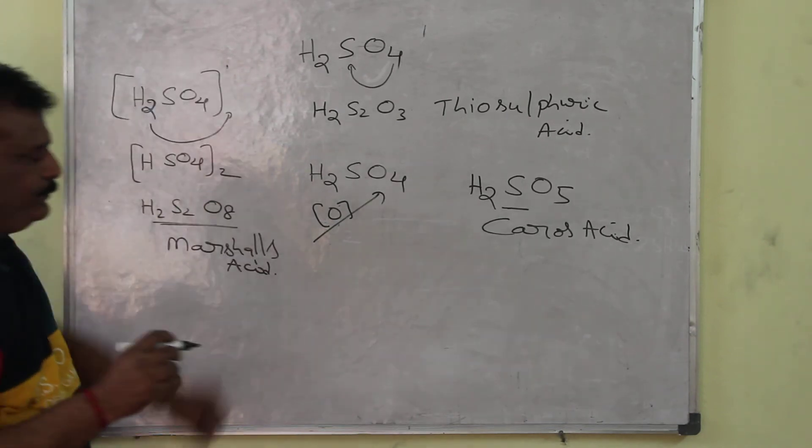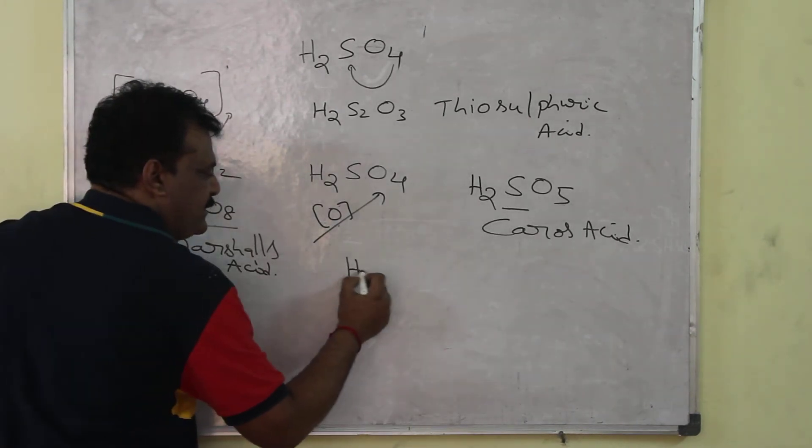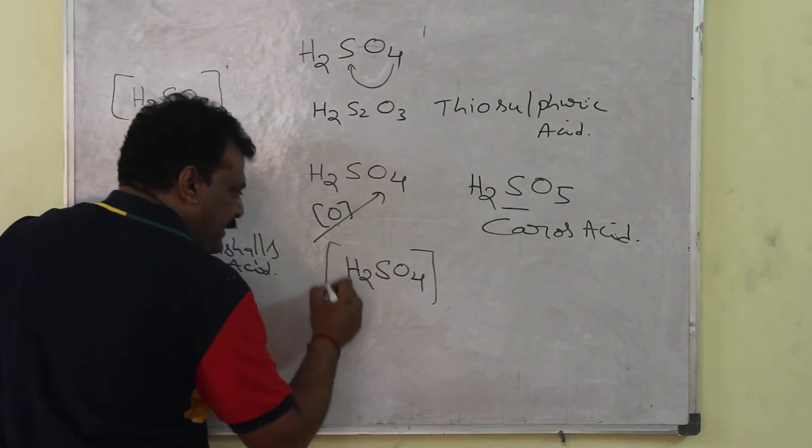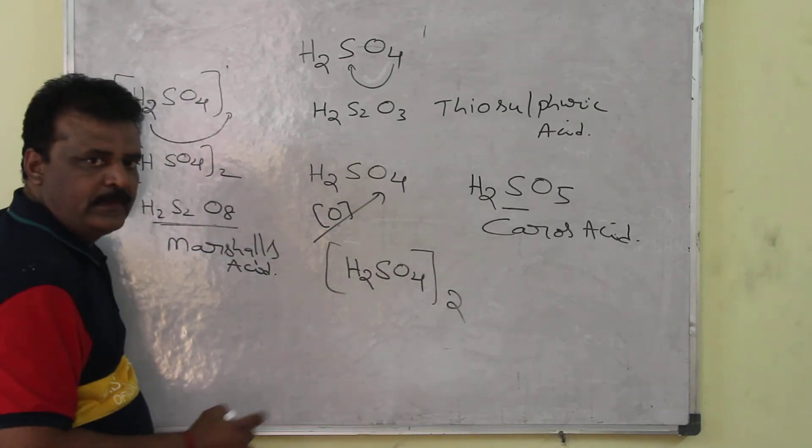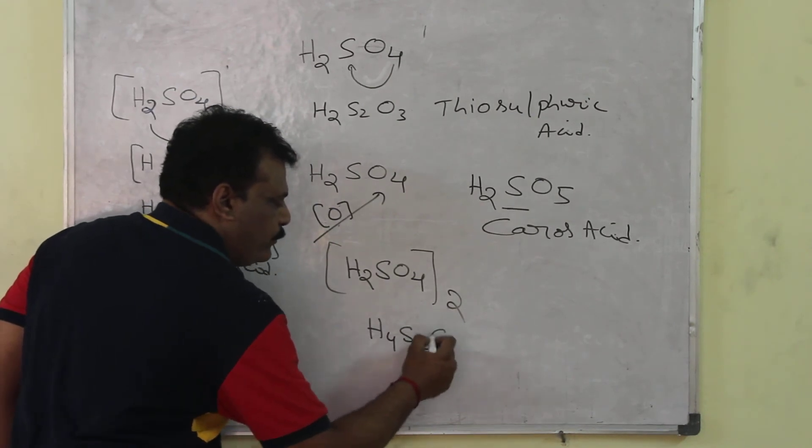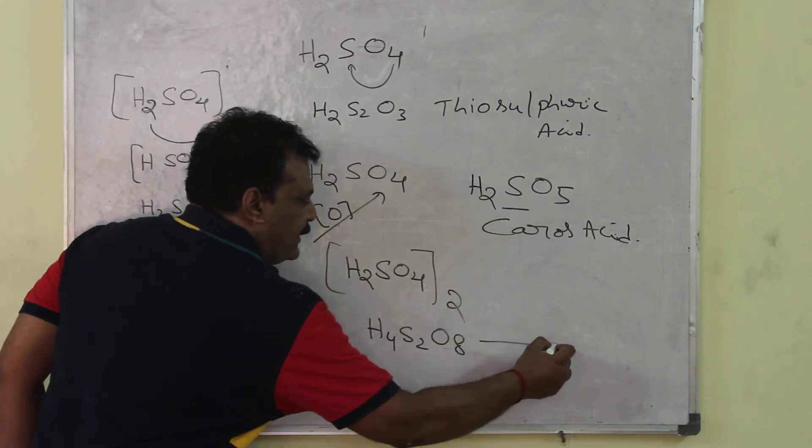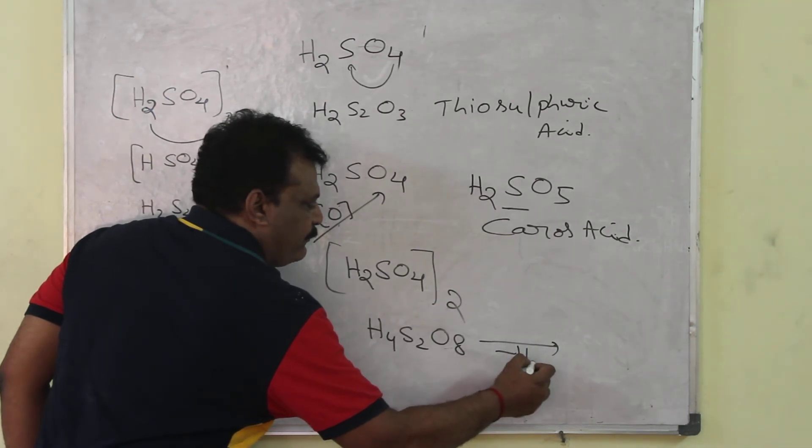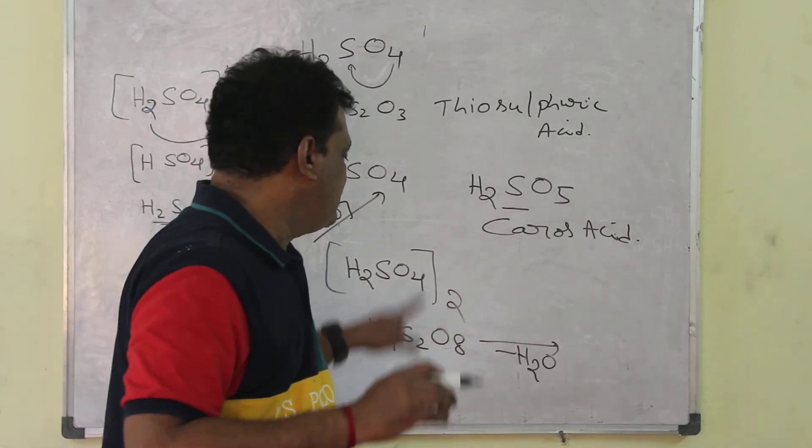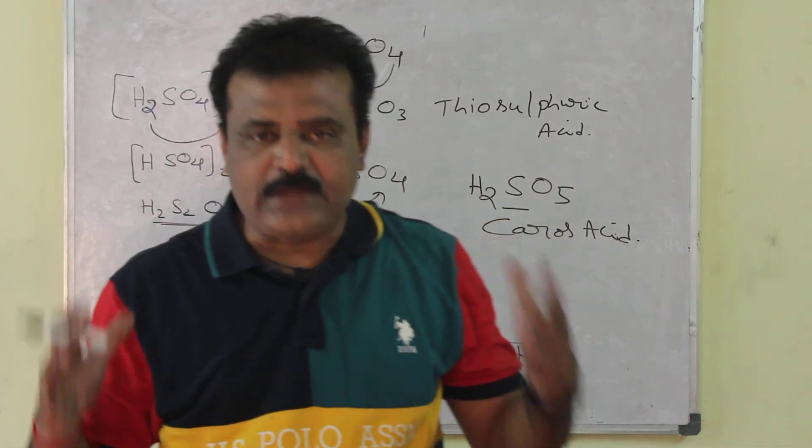Now, sulfuric acid H2SO4. If you multiply by two, it becomes H4S2O8. Tell me what you want to get from this compound. Whatever you are going to get is pyrosulfuric acid.